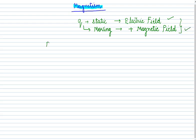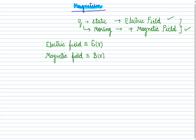The electric field is represented with the symbol capital E and it is a function of the position r. Similarly the magnetic field is represented with the symbol capital B and it is also a function of the position r. So electric field is capital E and magnetic field is capital B, and both are functions of position r.